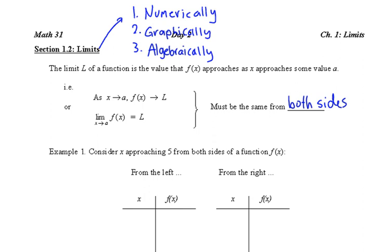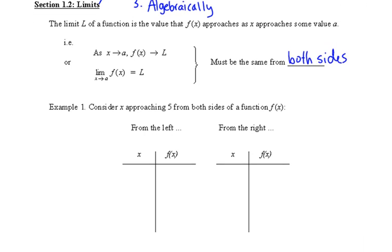Then we say the limit doesn't exist. So sometimes that would happen on a graph that looks like this, right? So it's a step function. So left, right, does not approach the same thing. So in those cases, the limit does not exist if it doesn't approach the same thing on both sides.